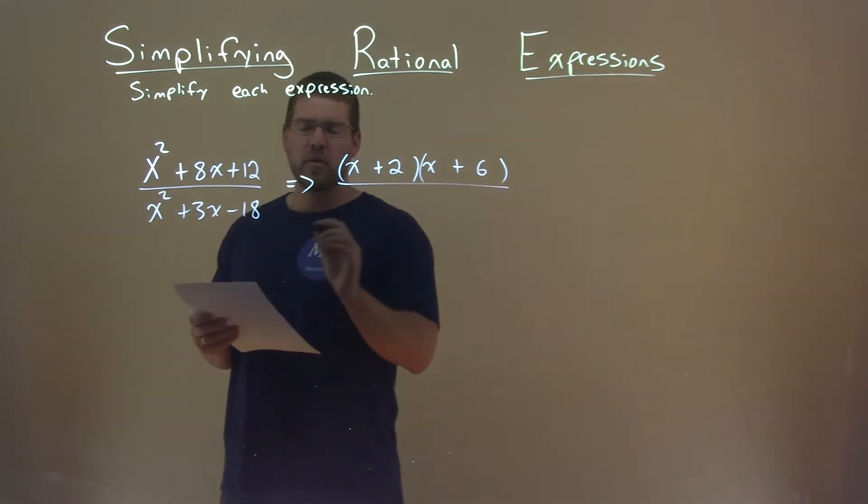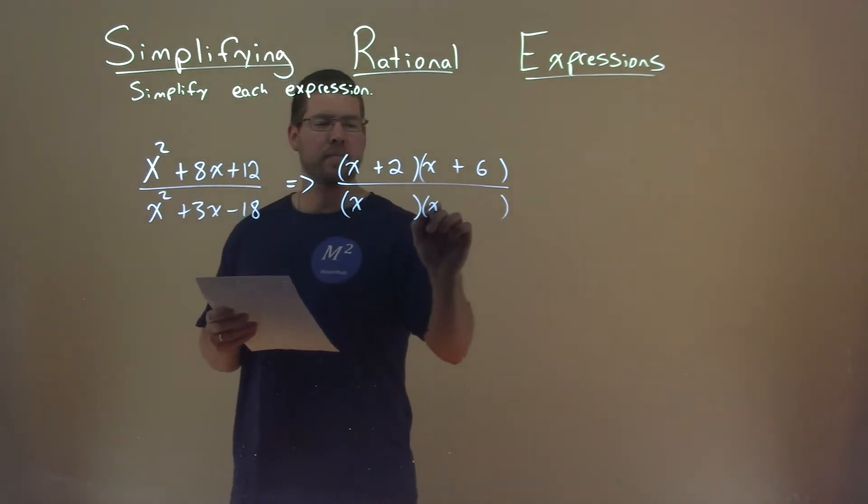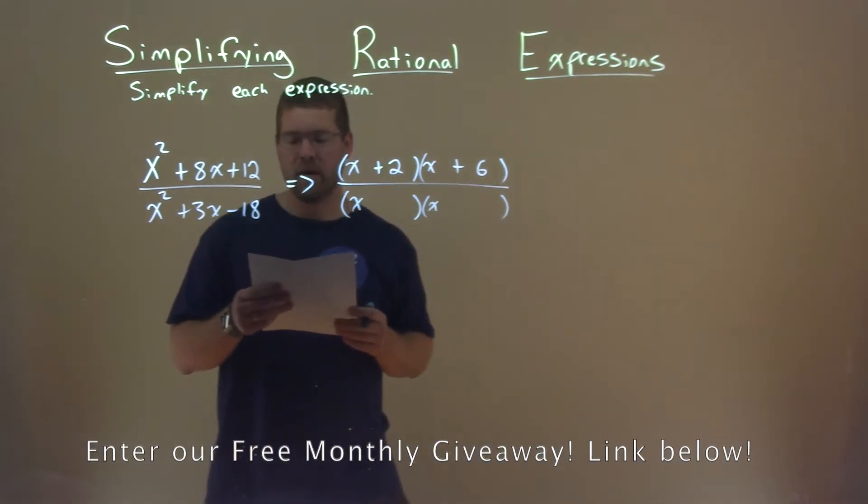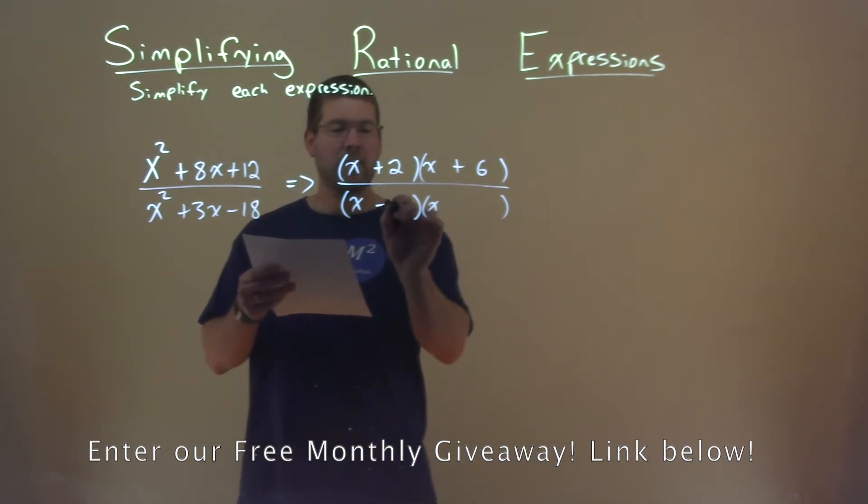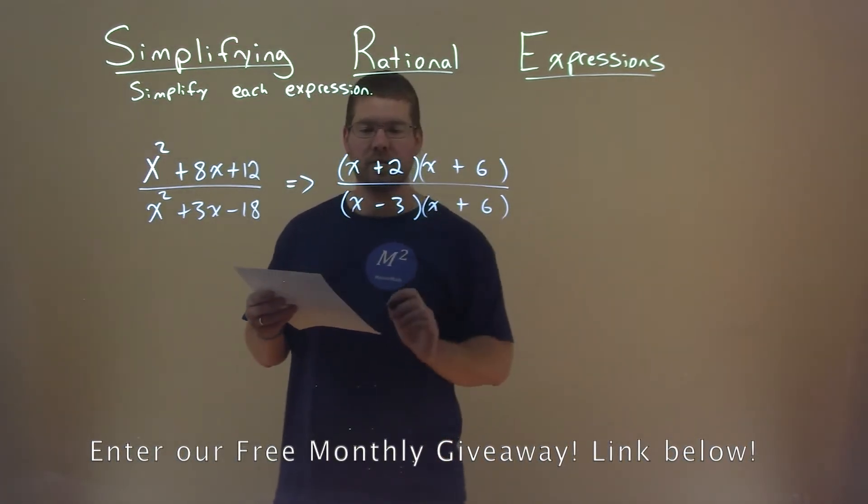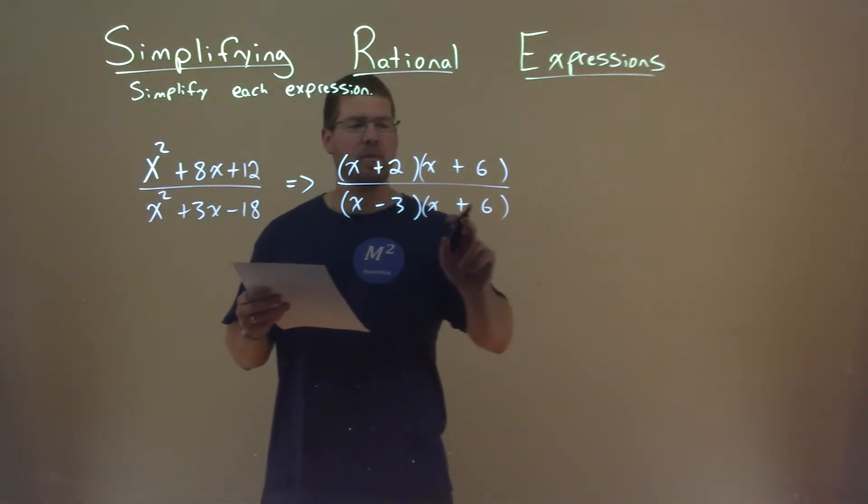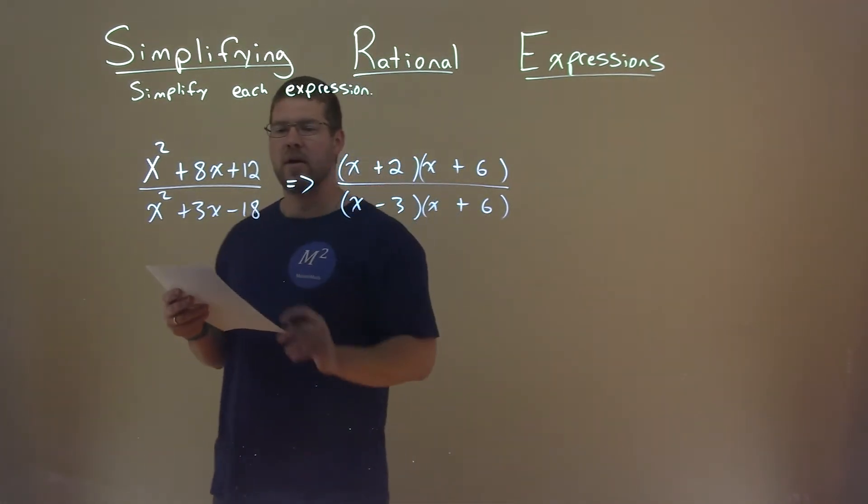But now let's go to the denominator. Can we factor this? Well, we have our form again. What two numbers multiply to be negative 18 but add to be a positive 3? That's a minus 3 and a plus 6. Minus 3 times 6 is negative 18. Minus 3 plus 6 is a positive 3.